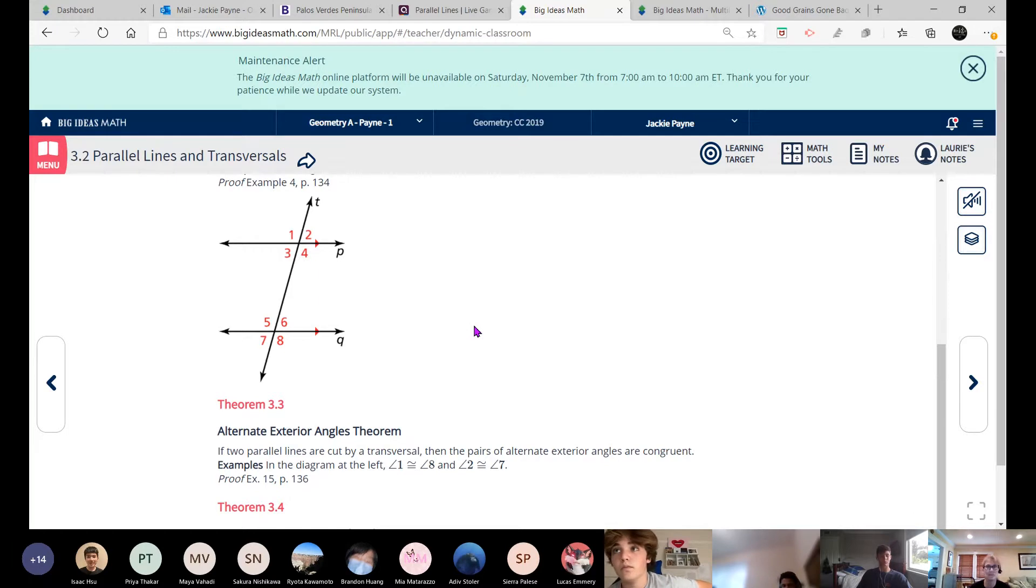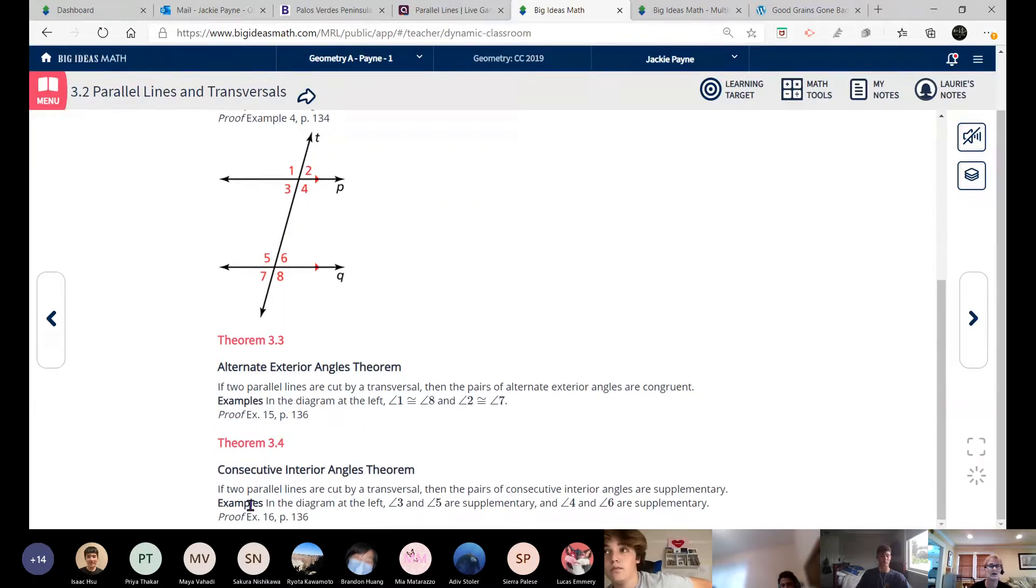Now theorem 3.4 isn't exactly the same. 3.4 is about four and six. So if you remember what those are called, they're called consecutive interior angles. So they're right next to each other. There's nothing between four and six, and they're between P and Q. And what that says is the pairs of consecutive interior angles are supplementary. So four plus six are a linear pair. And three and five are a linear pair in these examples. So that means we can say that the measurements are equal to 180. Again, these proofs are on page 136, example 15 and example 16. But to do your assignment, you don't really need to know the proofs.